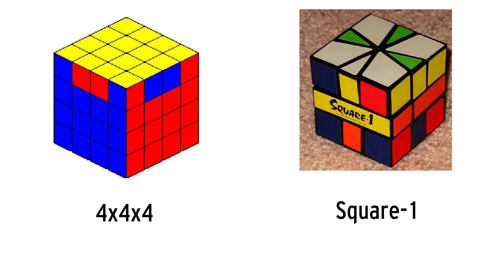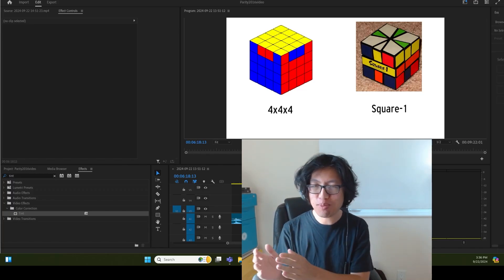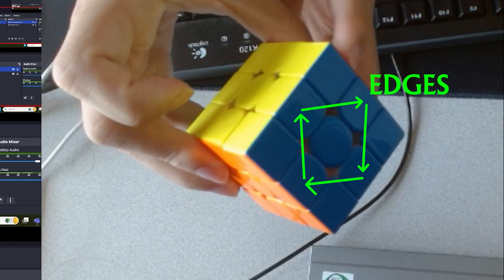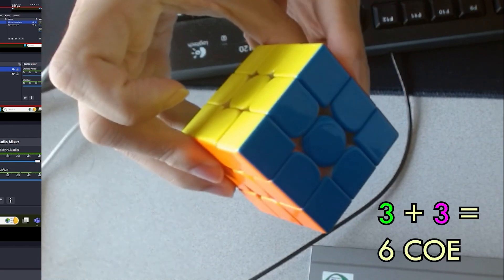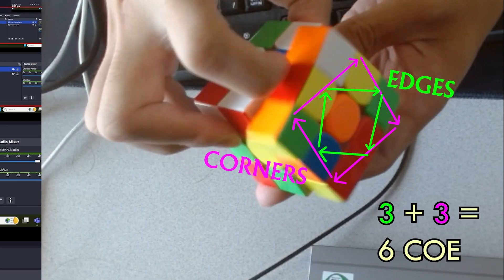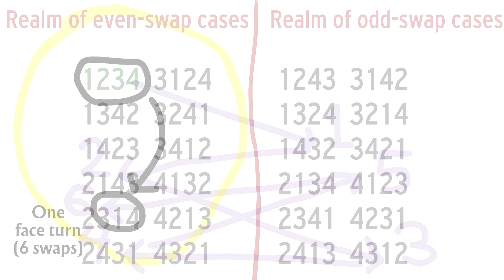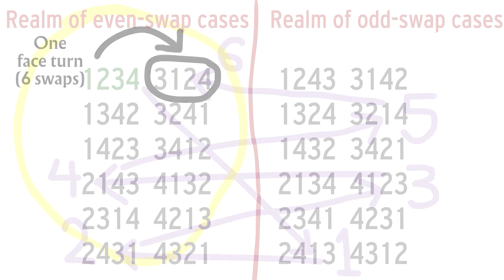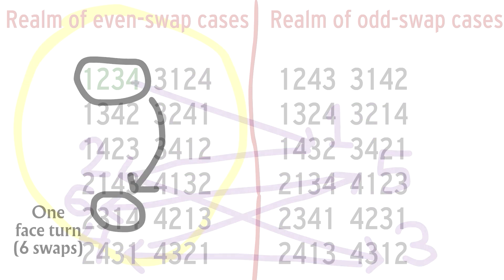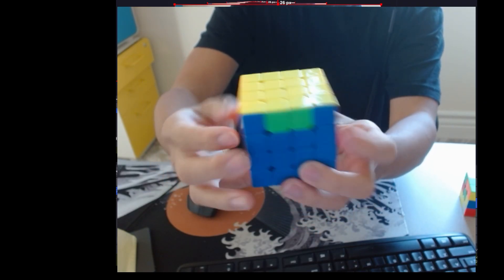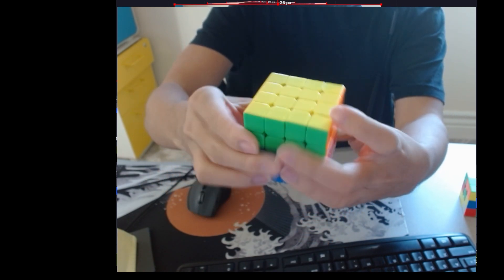Finally, how is this related to speedcubing? When you make a turn on a 3x3, you're doing two four-cycles — one for the edges and one for the corners. That's six chunks of entropy, which you can think of as six swaps happening simultaneously. Six is even, which means that if you start from the solved state and do any sequence of moves, your result will always be even. You will never be left with a state like a single swap — one is odd. That's why when you end up with that case on a 4x4 while simulating a 3x3, you must use moves otherwise not available on a 3x3 to get back to the solved state. No sequence of 3x3 moves will let you make the leap from the realm of odd chunks of entropy to the realm of even chunks of entropy.